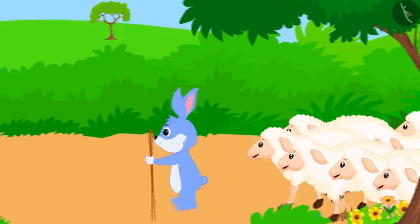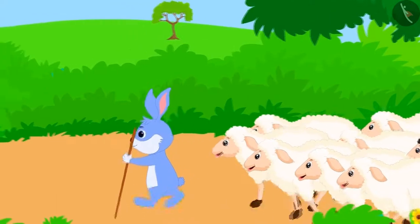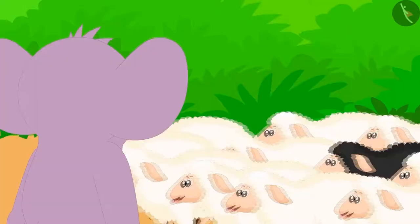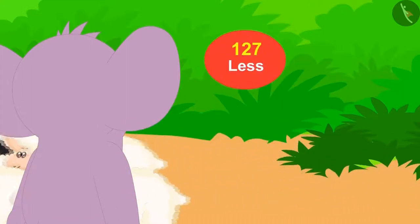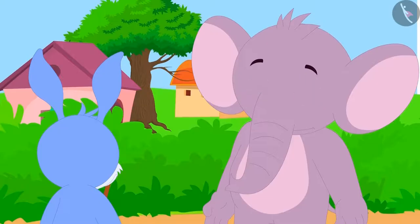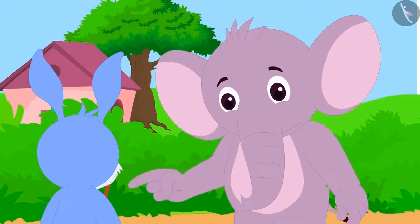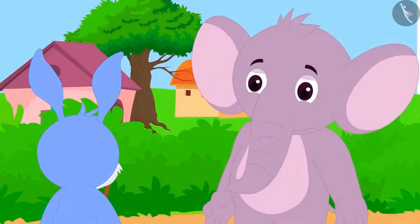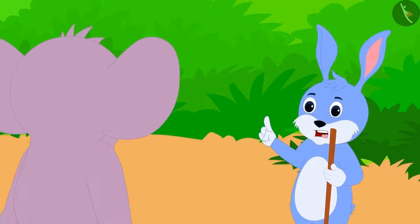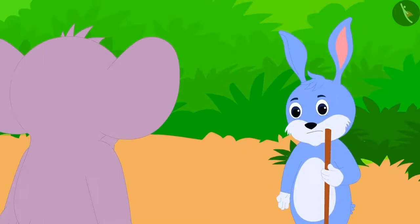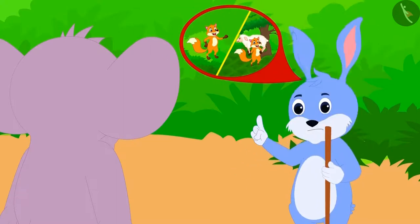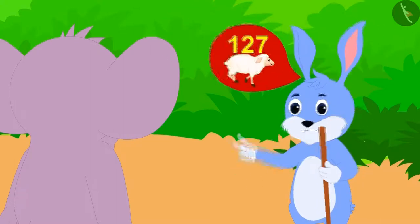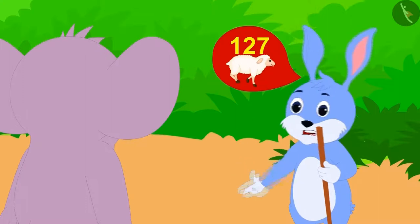A week later when Bunny returned in the evening with the sheep, Appu found that 127 sheep were missing. When Appu asked Bunny about those 127 missing sheep, Bunny told him that a wolf came daily to the mountain area where he took the sheep to graze, and the wolf ate 127 sheep in a week.